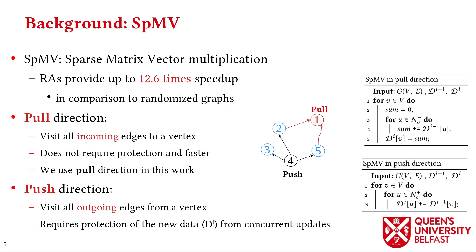SPMV can be performed in two directions. In the pull direction, each vertex reads data of its in-neighbors, and in the push direction, each vertex updates data of its out-neighbors. Parallel push traversal requires protecting vertex data from concurrent accesses, so we use the pull direction in this work.